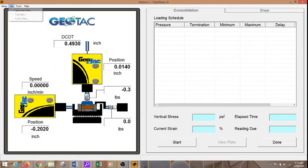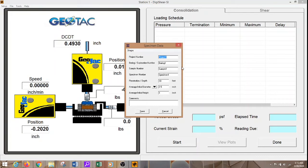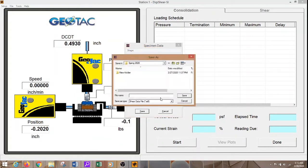And then I will move over to the file to enter the specimen data. Here will be spring 2020. Here will be river sand. Here will be spring 2020. And here will be 1 TSF. The diameter of the specimen is 2.5 inches and the height is 1 inch. And then we will save. 1 TSF again. Save.